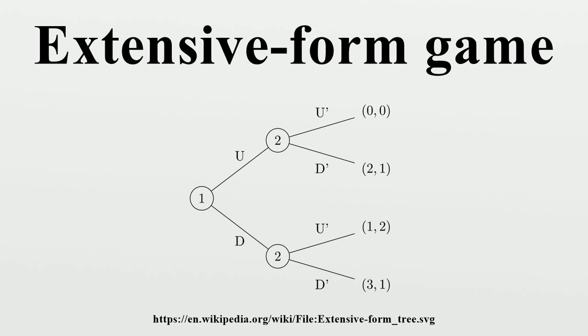The game on the right has two players, one and two. The numbers by every non-terminal node indicate to which player that decision node belongs. The numbers by every terminal node represent the payoffs to the players. The labels by every edge of the graph are the name of the action that edge represents. The initial node belongs to player one, indicating that player one moves first. Play according to the tree is as follows: Player one chooses between U and D. Player two observes player one's choice and then chooses between U' and D'. The payoffs are as specified in the tree. There are four outcomes represented by the four terminal nodes of the tree.